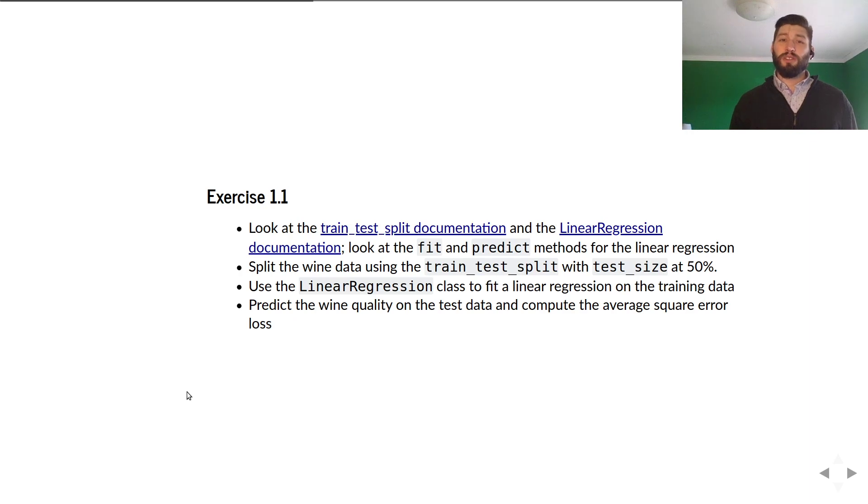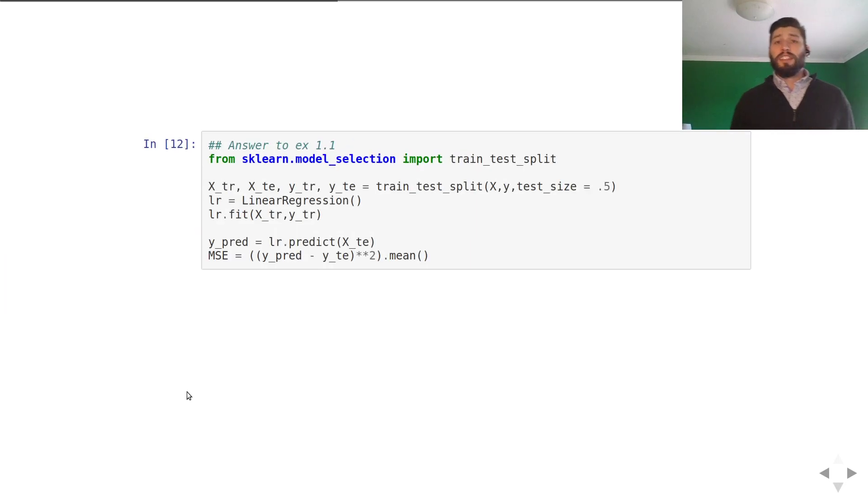So now I'm going to give you the solution, my quick solution to exercise 1.1. So if you haven't already done it, just pause the video and go back and complete that little exercise. Okay. So we still have to import the training test split. Now once we do that, this is the interface for training test split. It takes your X and your Y. X is a two-dimensional array. Y is a one-dimensional array. And you specify the test size to be 50%, which is 0.5. And then it spits out the X training, the X test, the Y training, and the Y test. Now we have to initialize the linear regression object. You don't have to specify any arguments for the linear regression object because it fits the intercept by default.